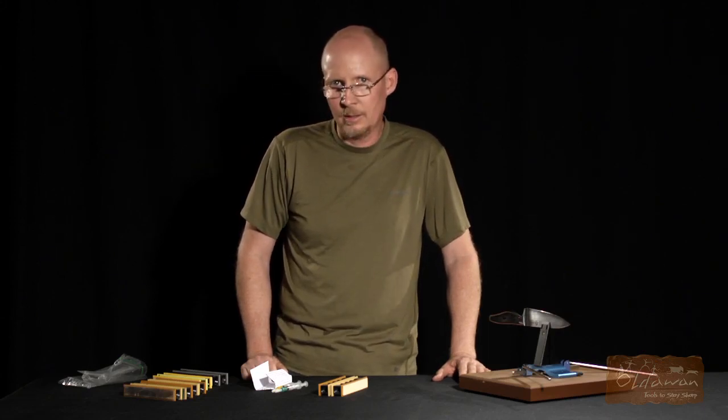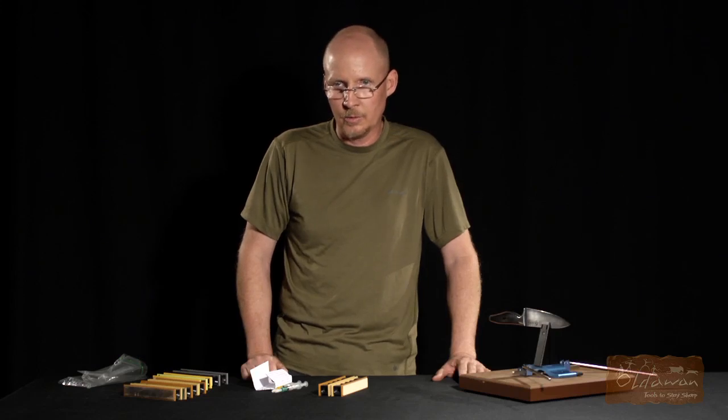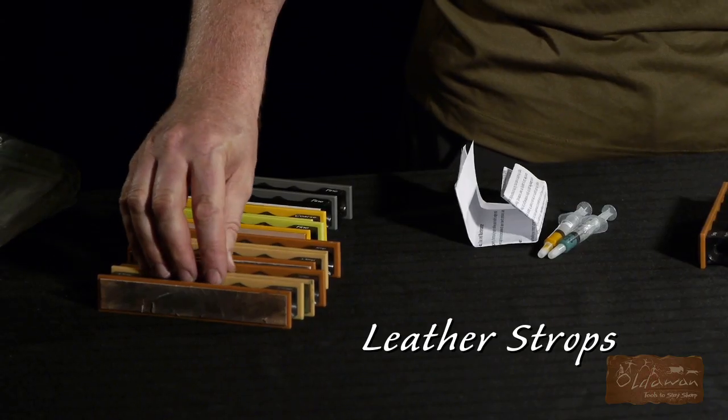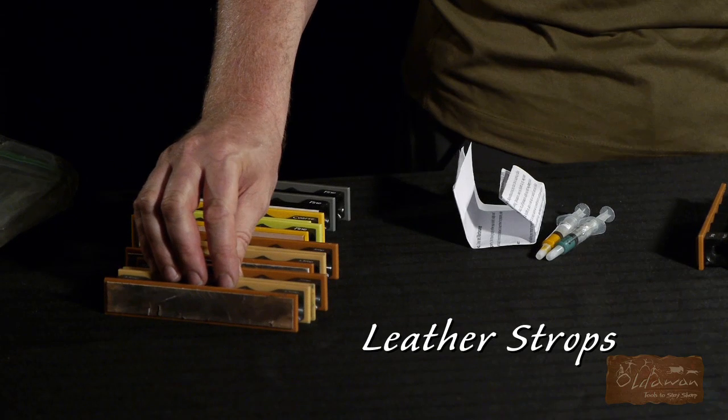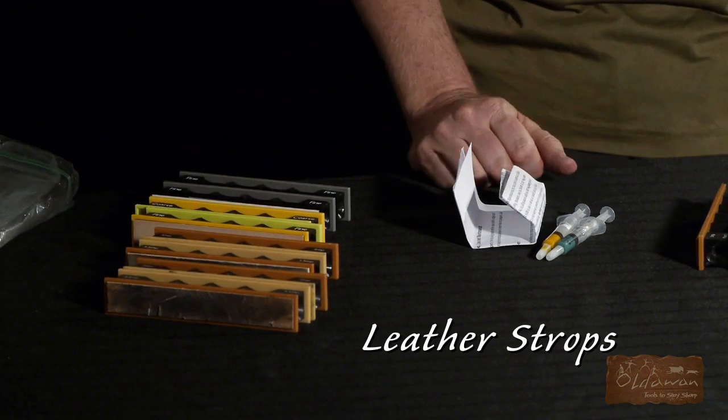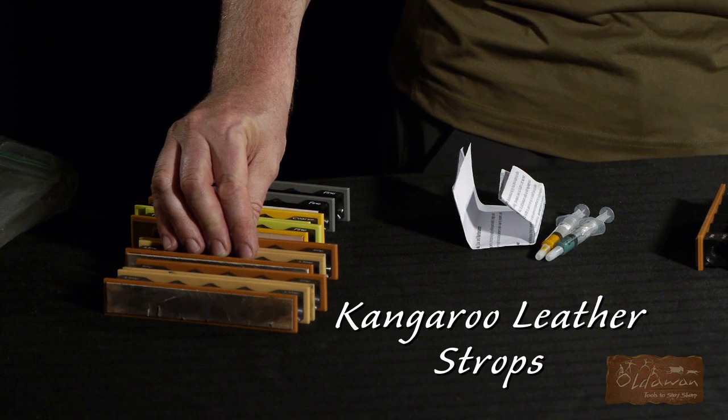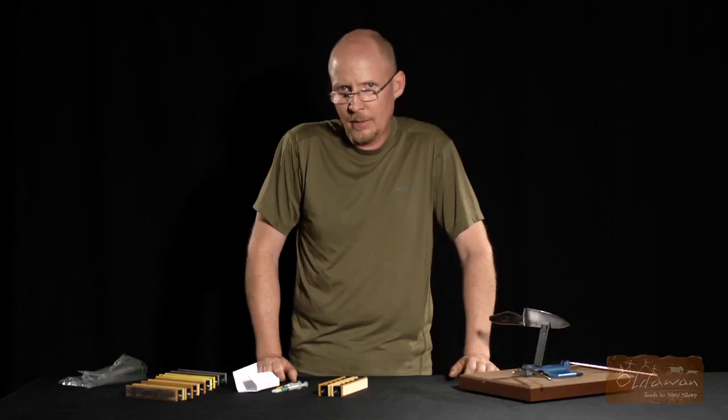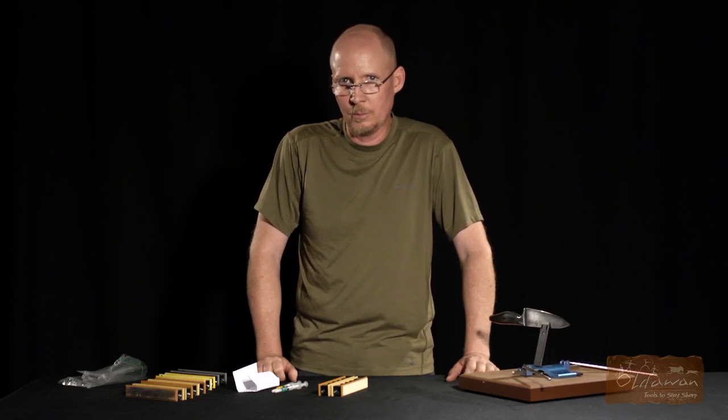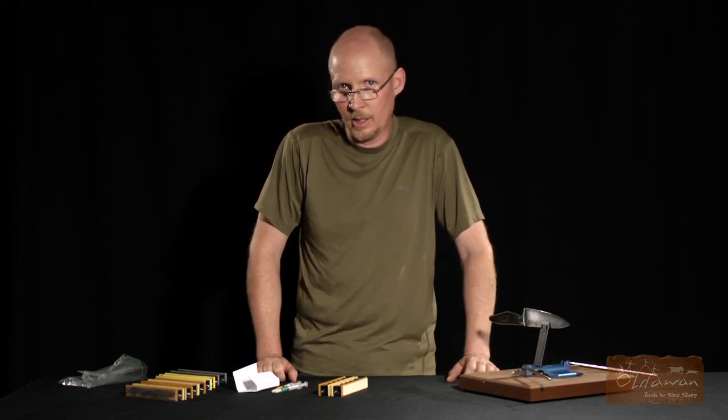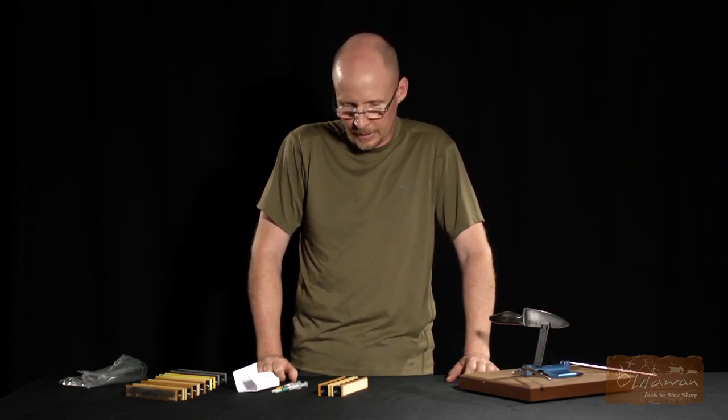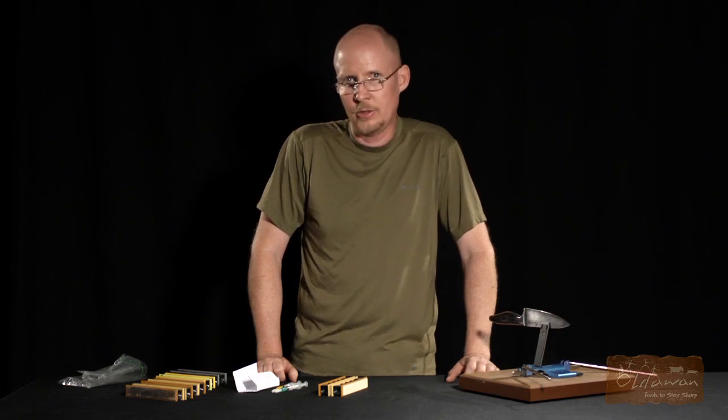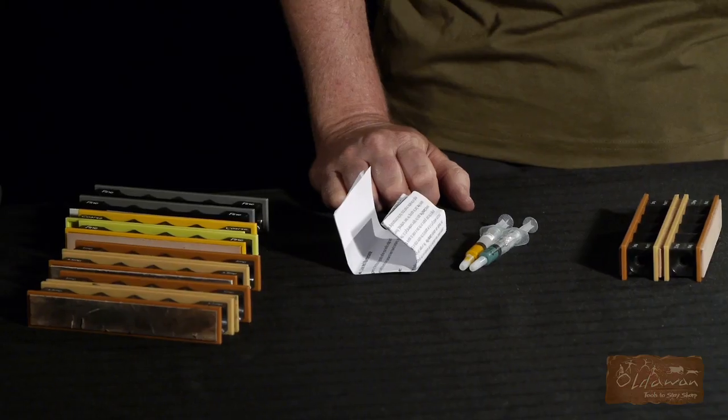We actually carry the strops in four different materials for the Wicked Edge: the leather strops, which come with the ProPak 1 and ProPak 2 standard, balsa wood strops, kangaroo leather strops, and nano cloth strops. What I find the strops do for me is they give the bevel a little more shine and they give the cutting edge a little more bite. I always like finishing with the strop no matter what I'm sharpening.